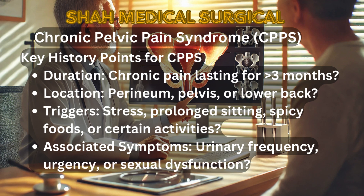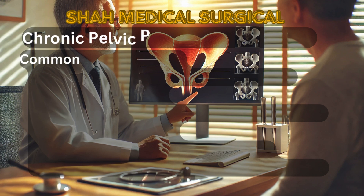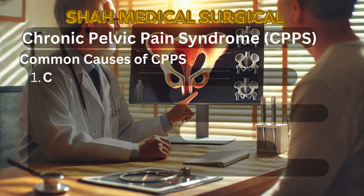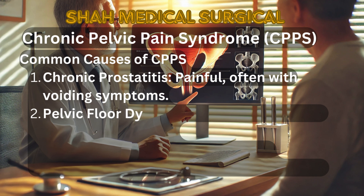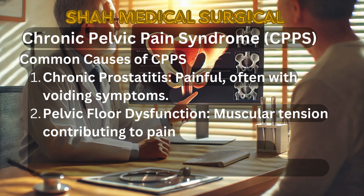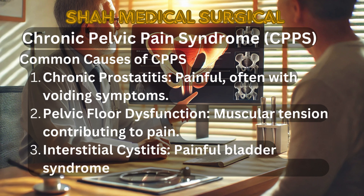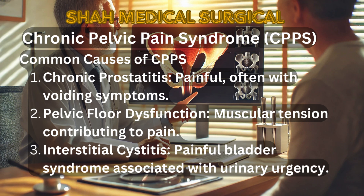5. Impact on daily life — ask about the effect on work, relationships, and emotional well-being. Common causes of chronic pelvic pain syndrome include: chronic prostatitis, often with painful urination and voiding symptoms; pelvic floor dysfunction, where muscle tension contributes to pain; and interstitial cystitis (painful bladder syndrome), associated with urgency and frequency. Explore the patient's psychological state, as this condition is often linked to stress and anxiety. Always rule out infections or other urological conditions that may mimic its symptoms.